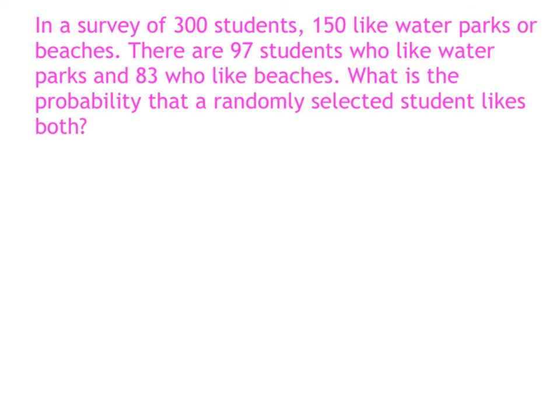Alright, next example. In a survey of 300 students, 150 of them like water parks or beaches. There are 97 students who like water parks and 83 who like beaches. So if you add 97 and 83 together, you will notice that that does not give you 150. So there is some overlap. What is the probability that a randomly selected student likes both?